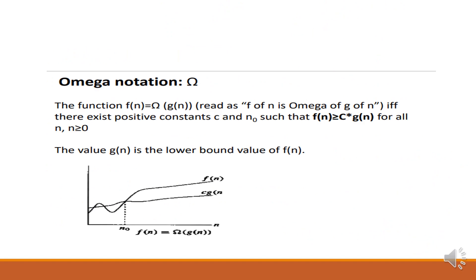Next, Omega notation: f(n) = Ω(g(n)) if and only if there exist positive constants c and n₀ such that f(n) ≥ c · g(n) for all n ≥ n₀. The value of g(n) here is a lower bound value of f(n). Unlike Big O which finds the upper bound, Big Omega finds the lower limit — after some point n₀, c·g(n) should remain below f(n).